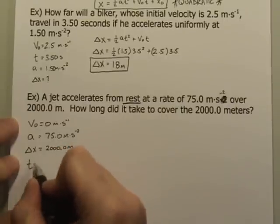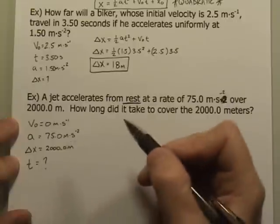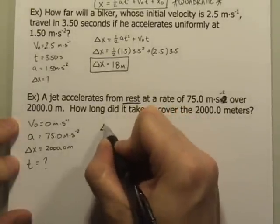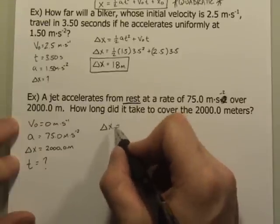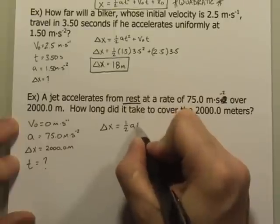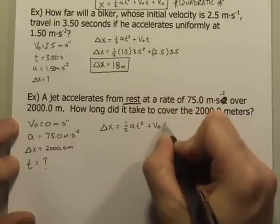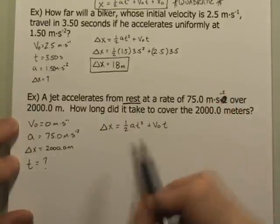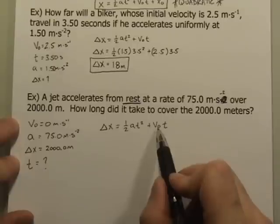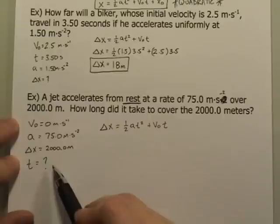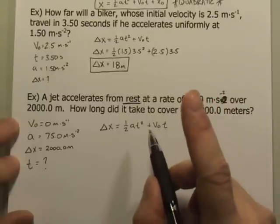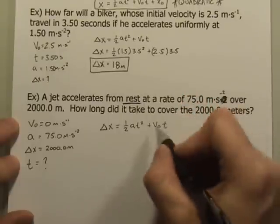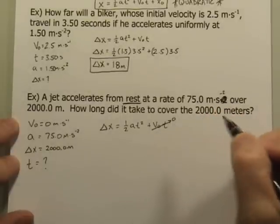The question is: how long did it take? First, write the entire equation in standard form: delta x equals one half AT squared plus V-naught T. Here's the trick — this V-naught, the initial velocity, is zero. So when I multiply by time, no matter what its value, multiplying by zero makes it go away. When you see that a property is zero, cross it out.